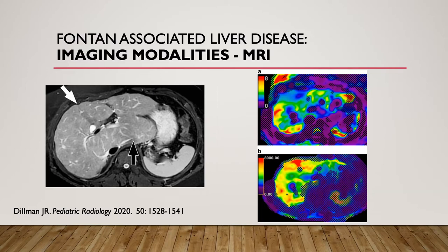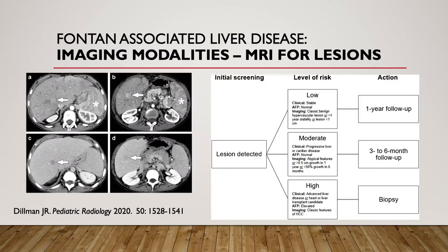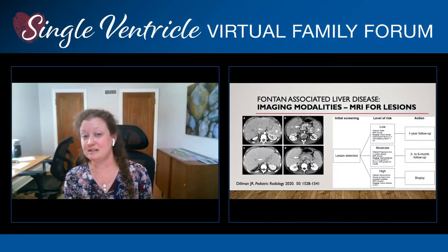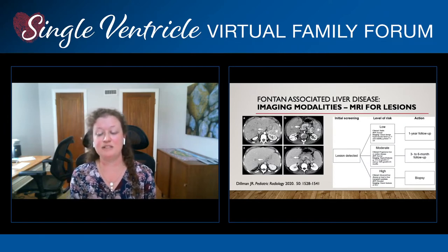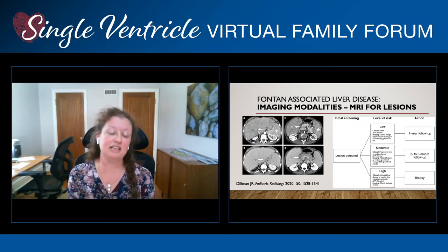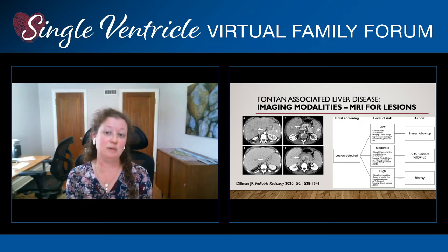We also use MRIs to screen for any sign of liver nodules or lesions, which do have the potential to develop over time. We typically screen every year to every other year using ultrasound, MRI, or CT to look for these lesions. On the left side of your screen the arrows are pointing out liver lesions present in a patient with Fontan-associated liver disease. Our radiologists can determine if a nodule is concerning and how often to screen going forward — anywhere between three and six months up to one year. We follow a lab test called AFP typically every six months if we're starting to see nodules, and if imaging alone can't determine what a lesion is, we can use CT-guided imaging to biopsy it.